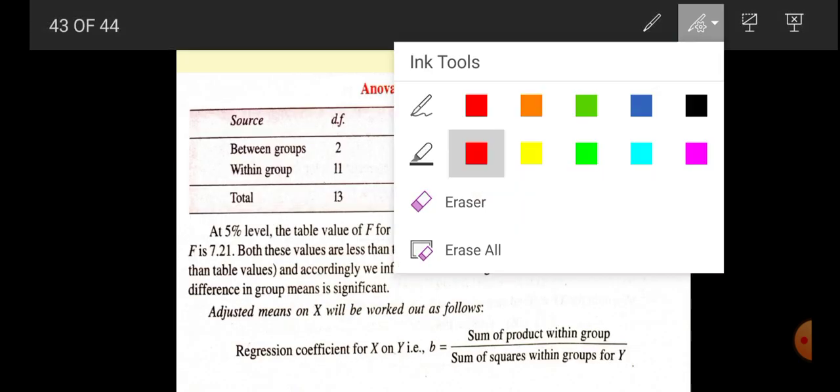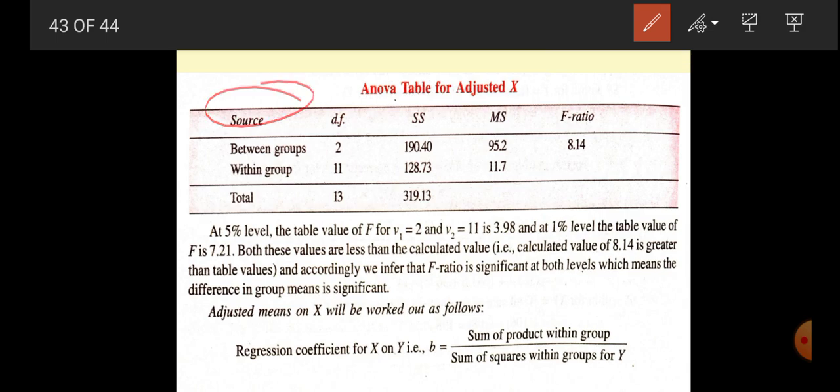With the help of formula, between groups degree of freedom is 2, within groups 11. Sum of squares is 190.40 and 128. Now we have to get MS. MS formula is SS divided by DF. So 95.2 and 128.73 divided by 11 is 11.73. If you get the F ratio, you will get 8.14. So total is this.